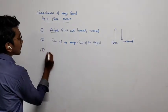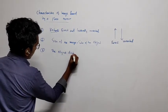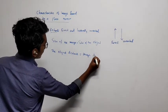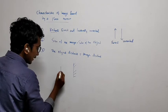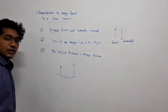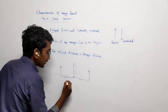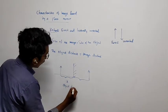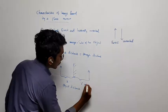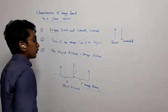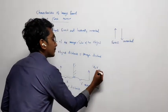The third property: object distance is equal to image distance. Suppose this is a mirror and here is an object. The object distance — represented by the letter u — is the distance from the object to the mirror. The image distance — represented by the letter v — is the distance from the mirror to the image. In the case of a plane mirror, u is equal to v.